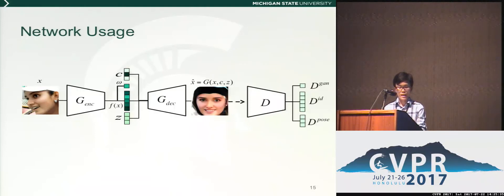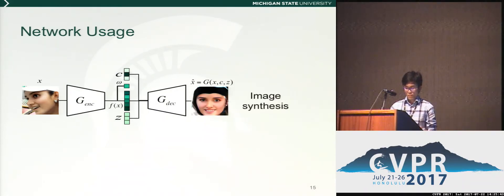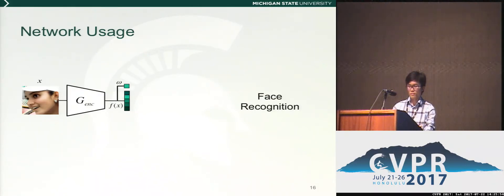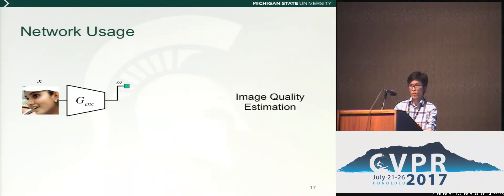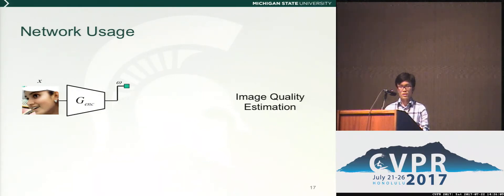To sum up, our D-AGAIN model can serve three different purposes. We use both the encoder and decoder for image synthesis. With only the encoder, the feature fx can be used for face recognition with any distance metric — in this work we simply use cosine distance. Finally, we may use omega as an image quality estimator. It can help to reduce the number of poor images during enrollment, or also help to weight features during testing. In both cases, it will help improve face recognition performance.